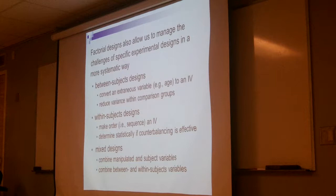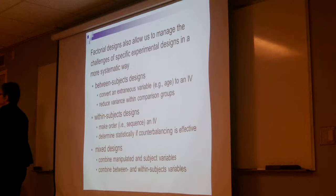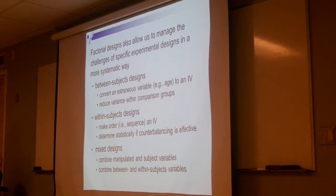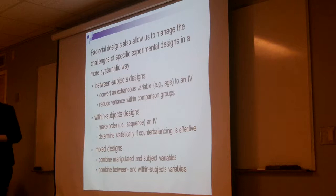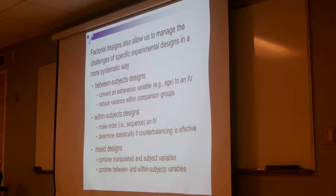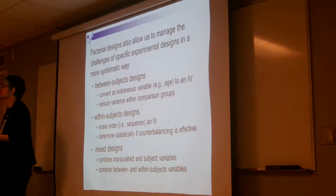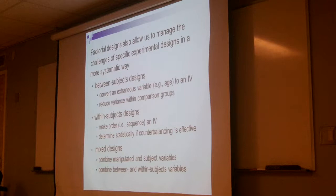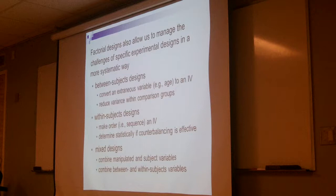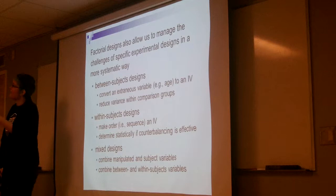Sometimes, as a way to address group similarity, we choose to restrict the range of variation or hold variables constant that we can't otherwise control. For example, in a study on college students, I might restrict the age range to 18–22 because I'm concerned that traditional-age students might behave differently than non-traditional students in their 40s, 50s, or 60s. The problem is that restricting the range excludes a subset of the population actually described by my participant group of college students.